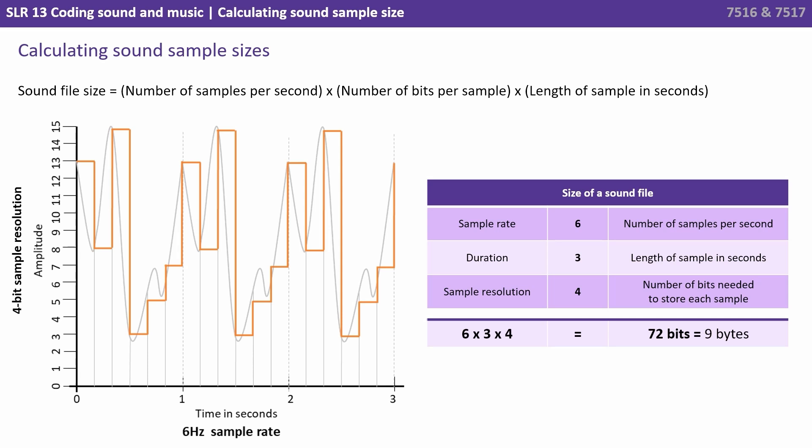And then we have the sample resolution, that's the number of bits needed to store each sample. Well we've got 16 different amplitudes on the left, so therefore we need 4 bits to store each of these values.